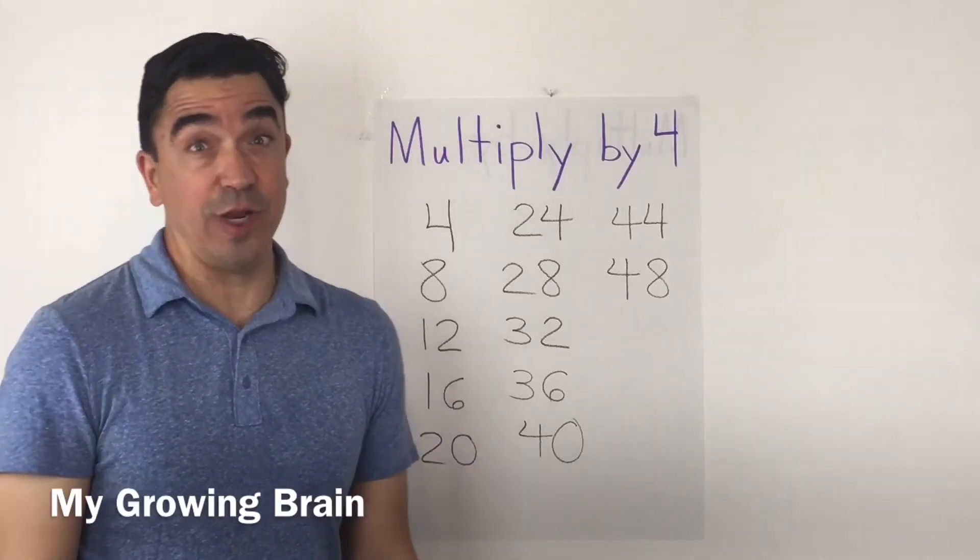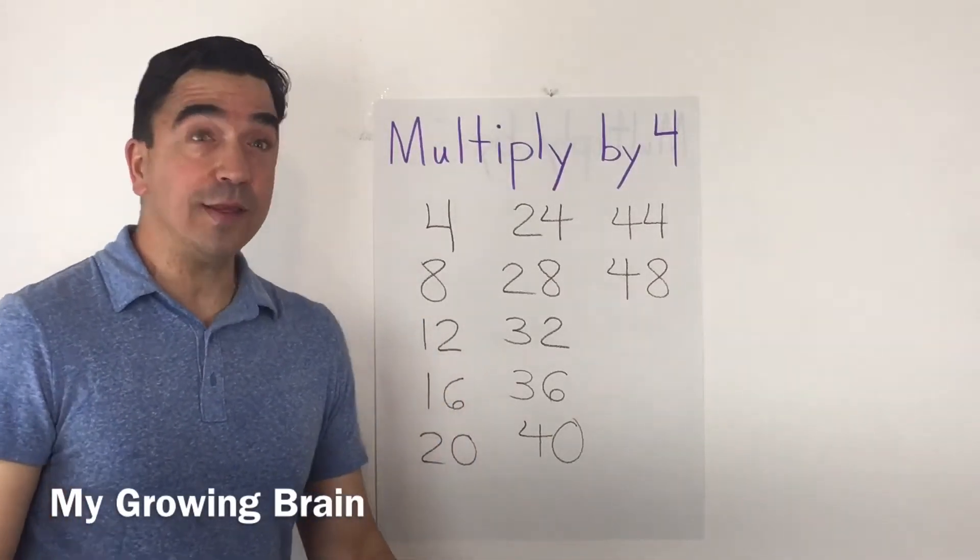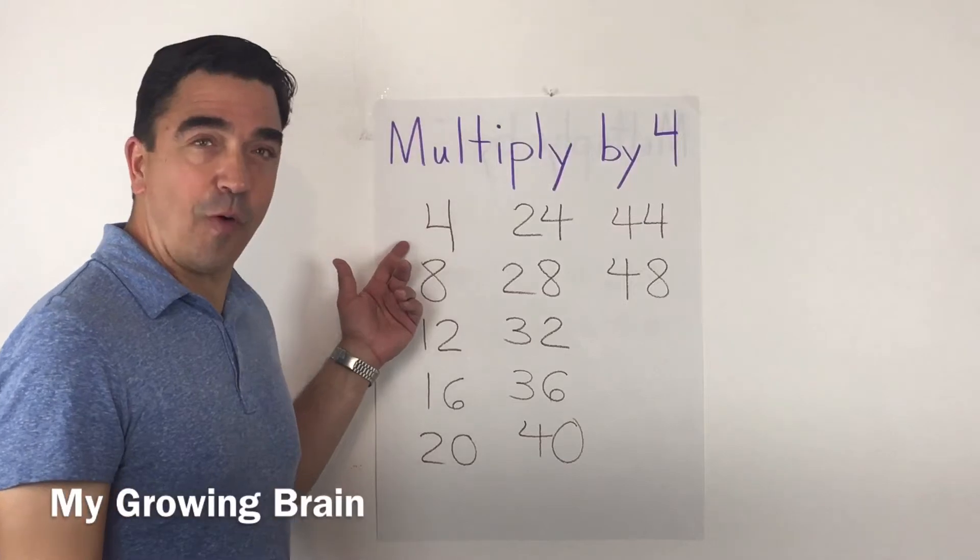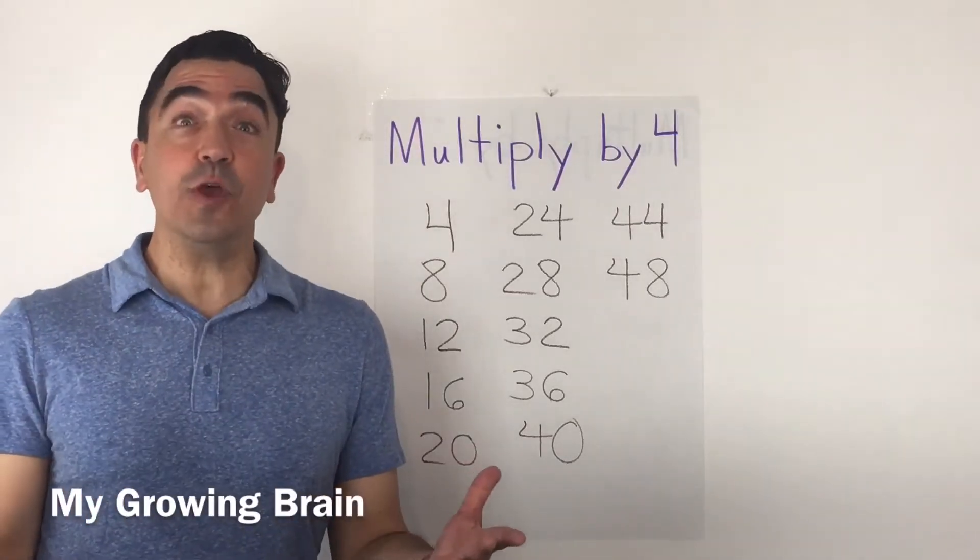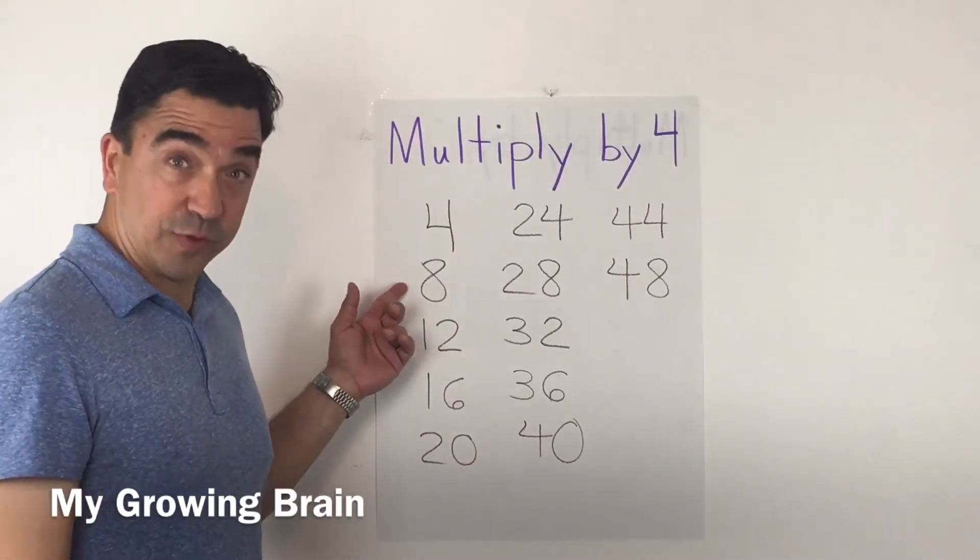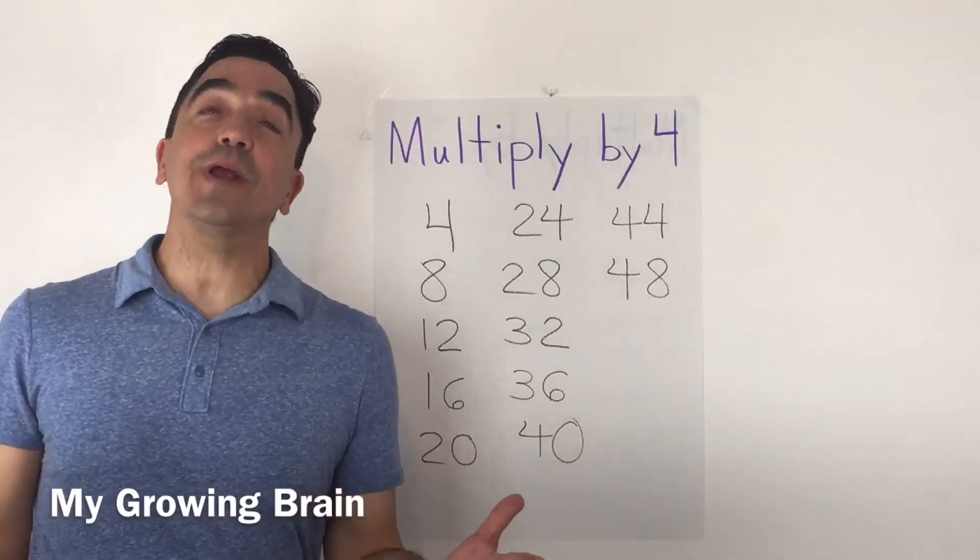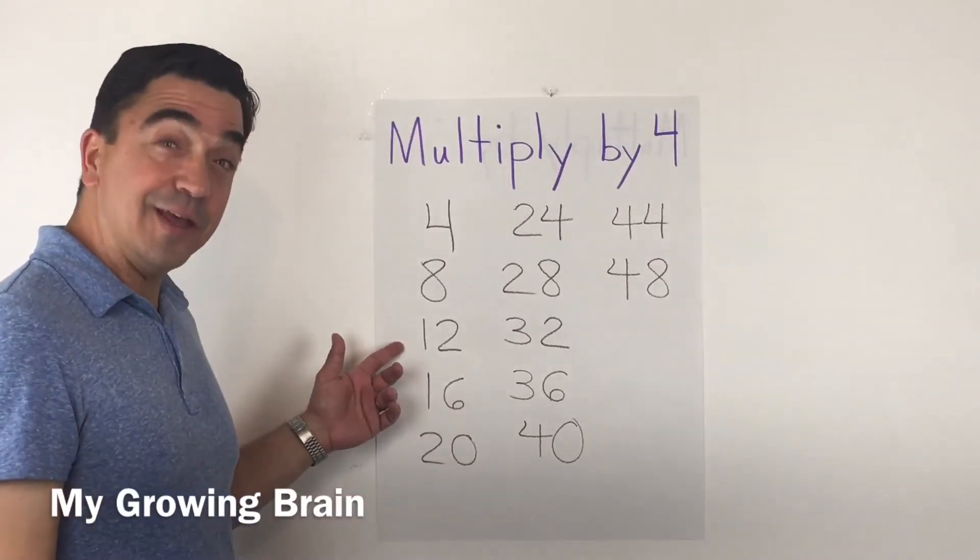Now here's the trick. 4 times 1 equals 4. 4 times 2 equals 8. 4 times 3 equals 12.